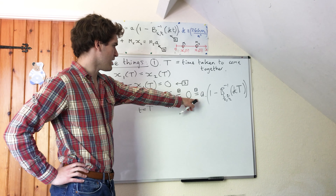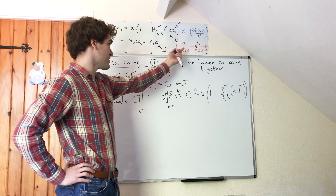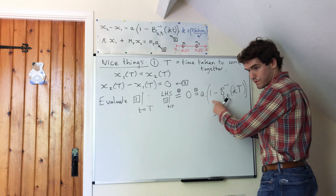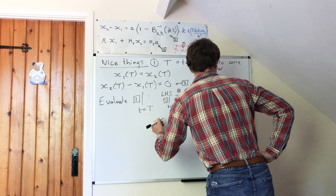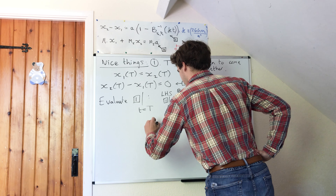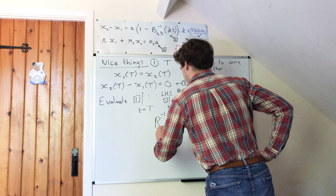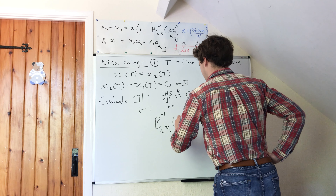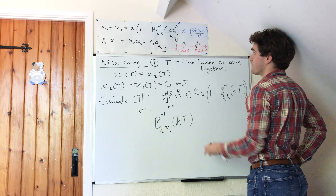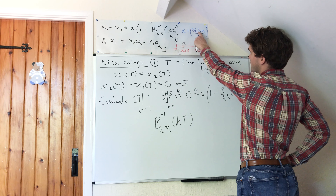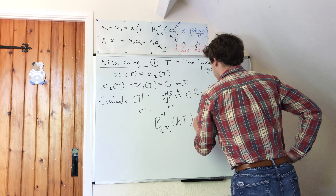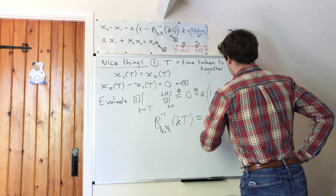Now all that's left to do is to solve this equation for big T. First of all, note that a is not equal to zero, because a is the distance they are apart at the start, so I can therefore say that one must be equal to the inverse incomplete beta function, half three over two, of kappa times big T, where kappa equals the square root of two times big G times m1 plus m2 divided by a cubed. And this will be equal to one.